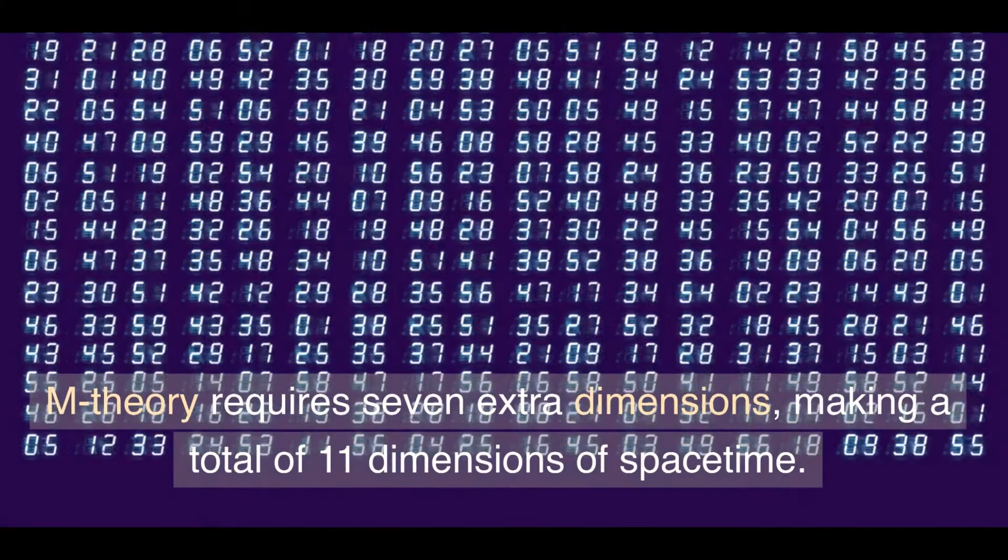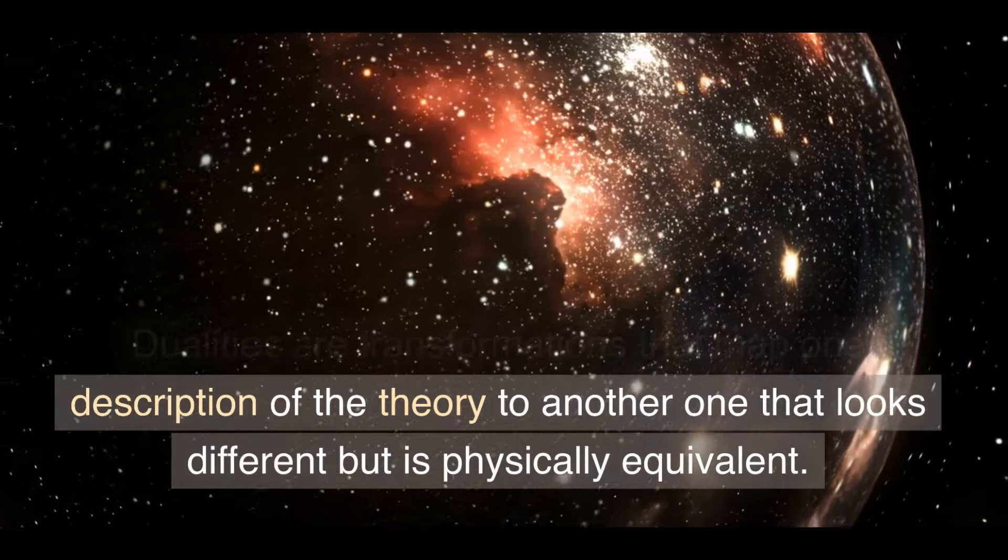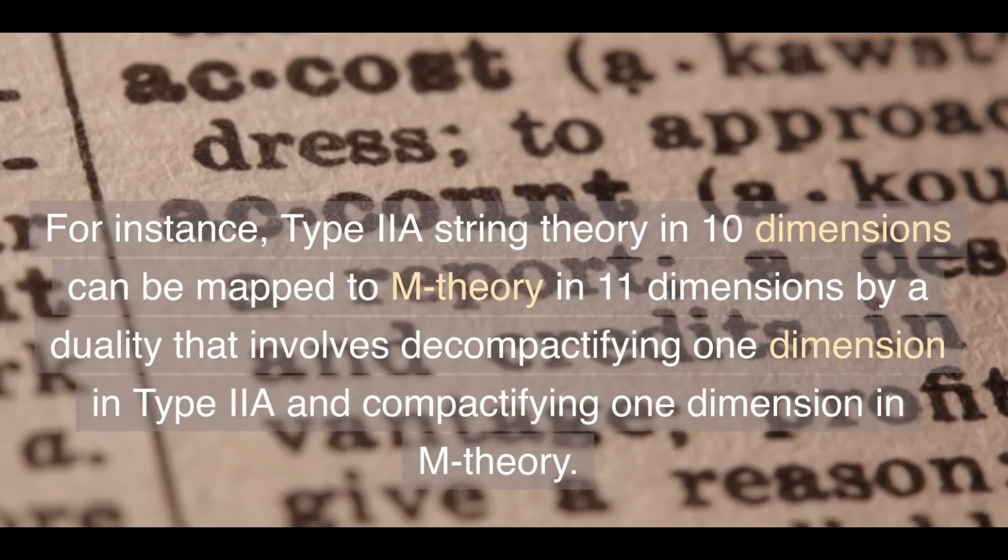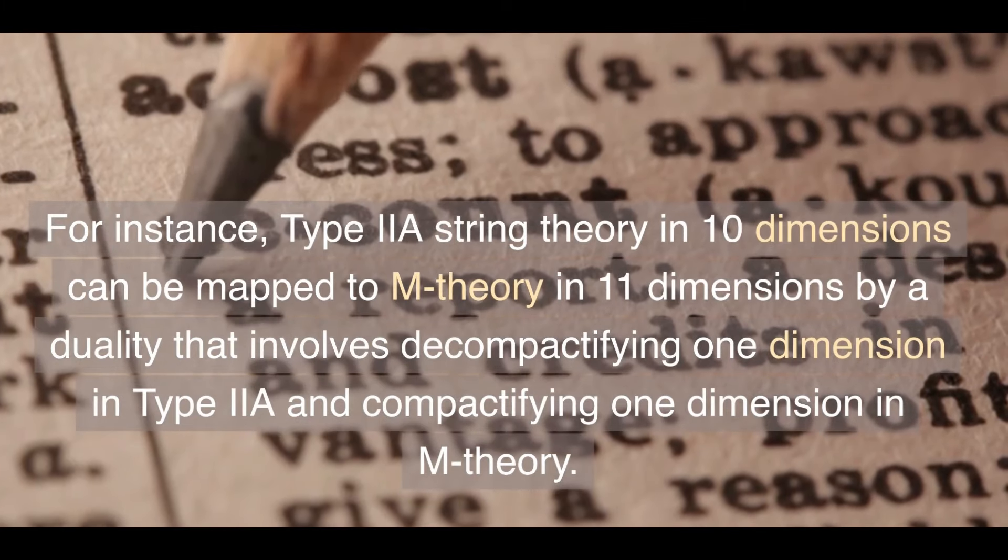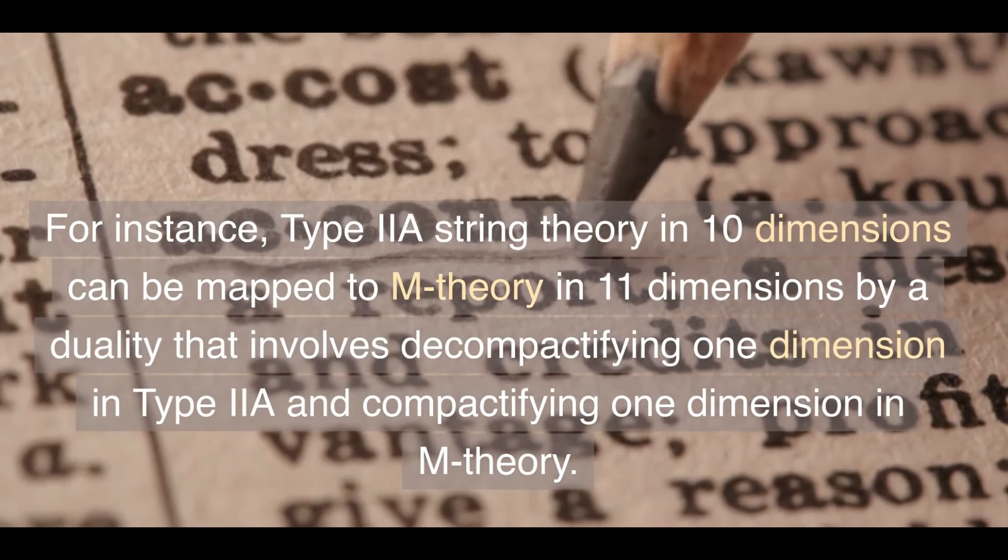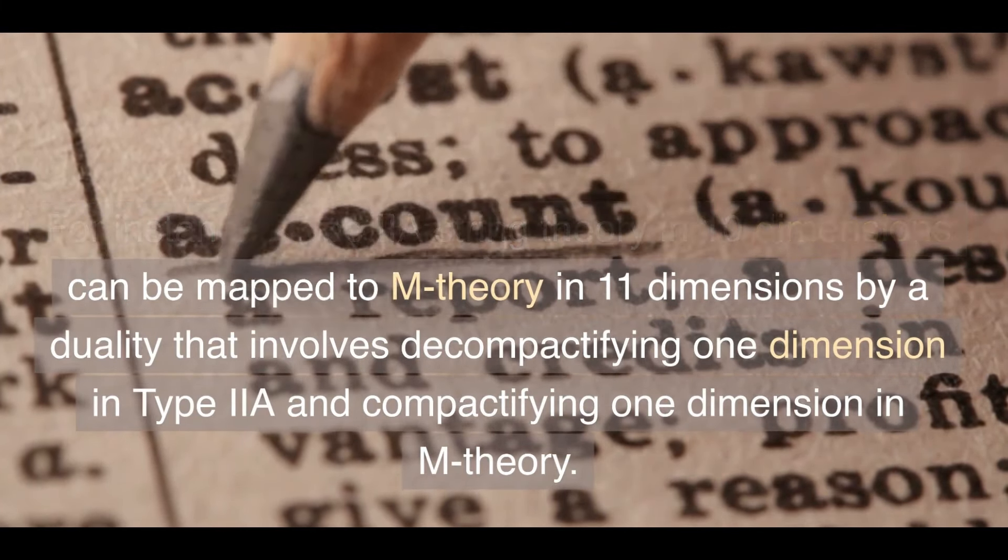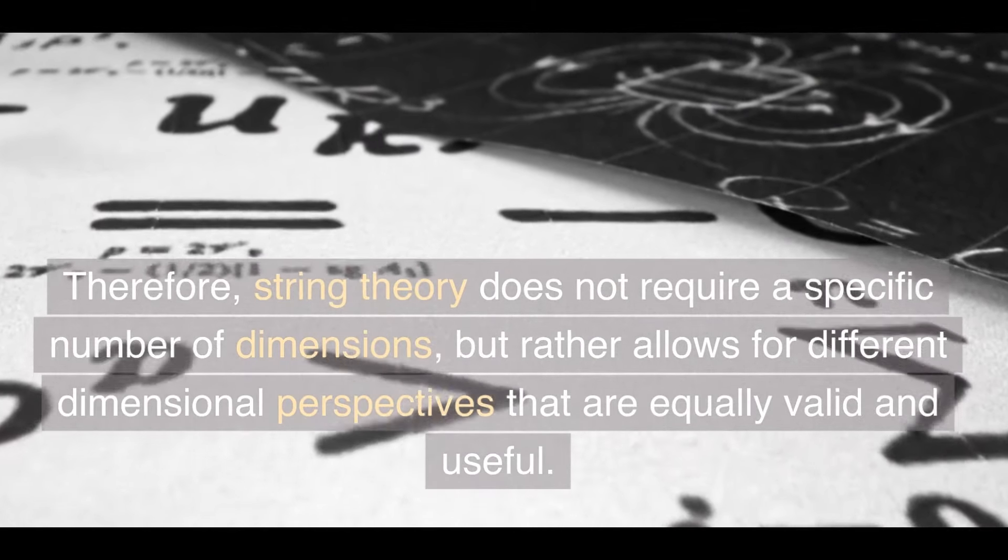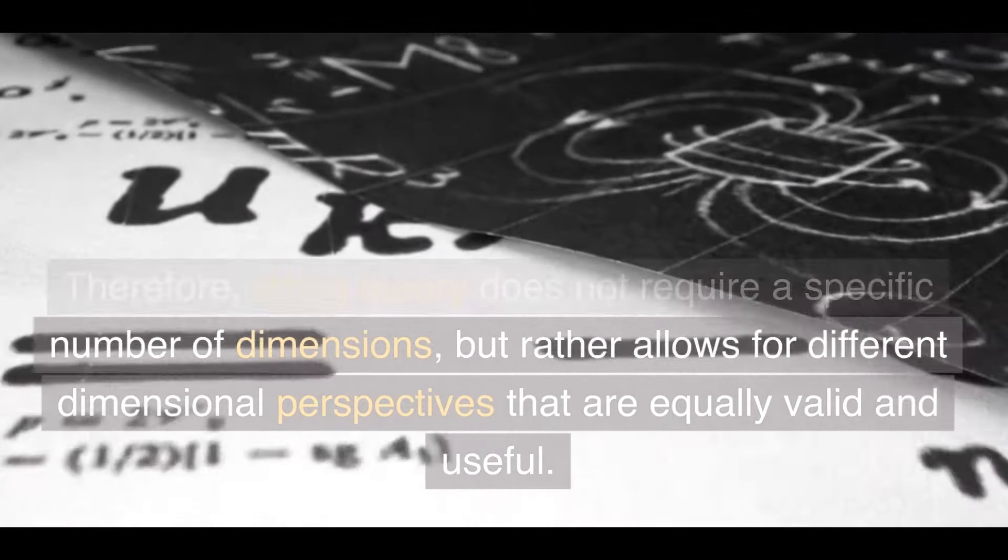Dualities are transformations that map one description of the theory to another one that looks different but is physically equivalent. For instance, type IIA string theory in 10 dimensions can be mapped to M-theory in 11 dimensions by a duality that involves decompactifying one dimension in type IIA and compactifying one dimension in M-theory. Therefore, string theory does not require a specific number of dimensions, but rather allows for different dimensional perspectives that are equally valid and useful.